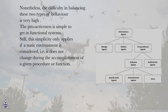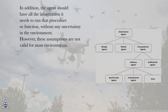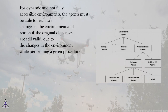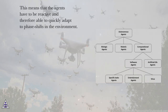One should define agents capable of balancing reactive with proactive behavior. Nonetheless, the difficulty in balancing these two types of behavior is very high. Proactiveness is simple to achieve in functional systems, but this simplicity only applies if a static environment is considered — i.e., it does not change during the accomplishment of a given procedure or function — and the agent has all the information it needs without any uncertainty. However, these assumptions are not valid for most environments. For dynamic and not fully accessible environments, the agents must be able to react to changes and reason if the original objectives are still valid, and must therefore be able to quickly adapt to face shifts in the environment.